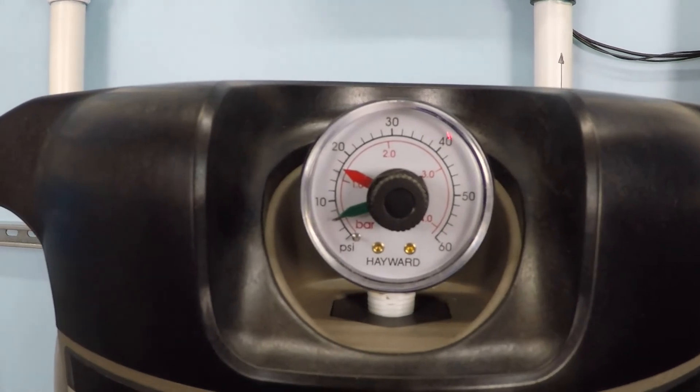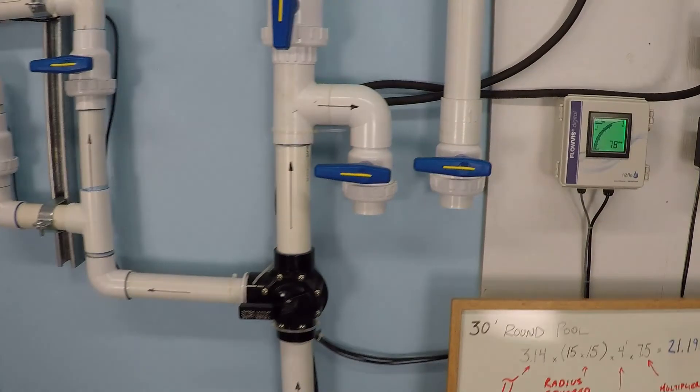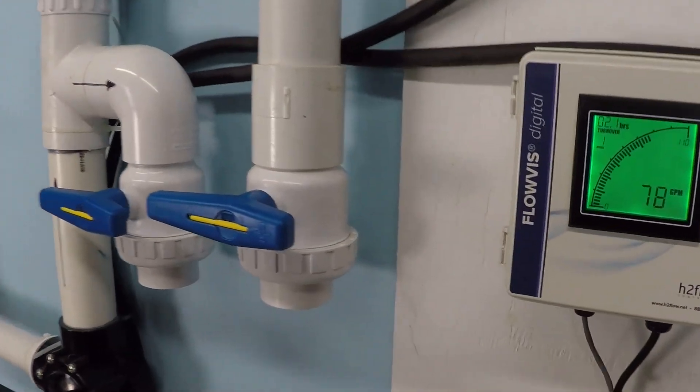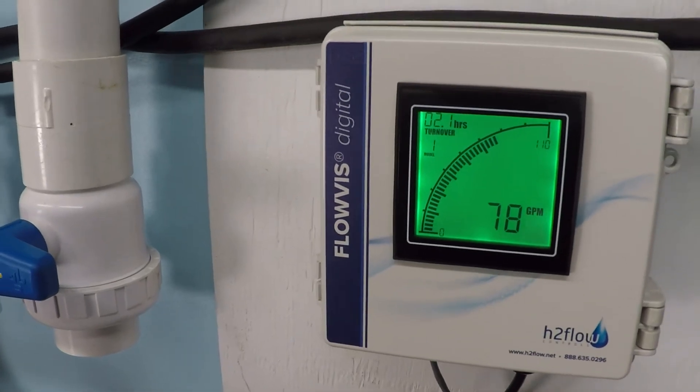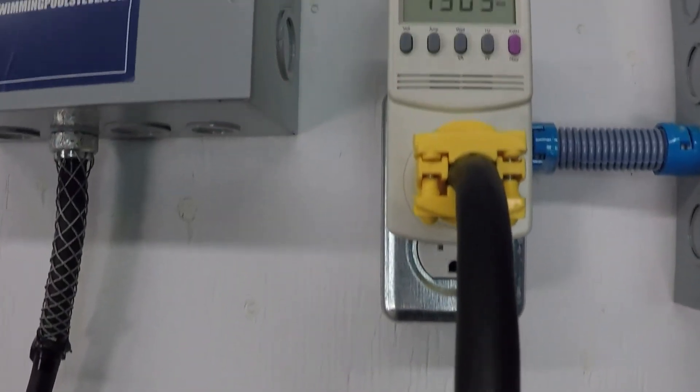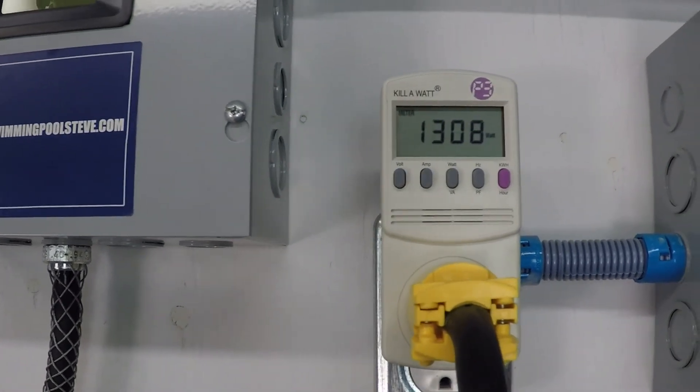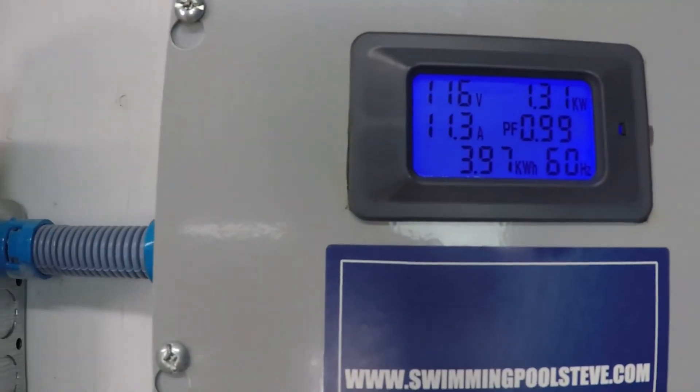Let's take a look at our filter pressure here. I'm going to call it about six PSI. 78 gallons per minute. That's quite a bit. But it's costing us a lot of power consumption here. Over 1300 watts, 1.3 kilowatts.